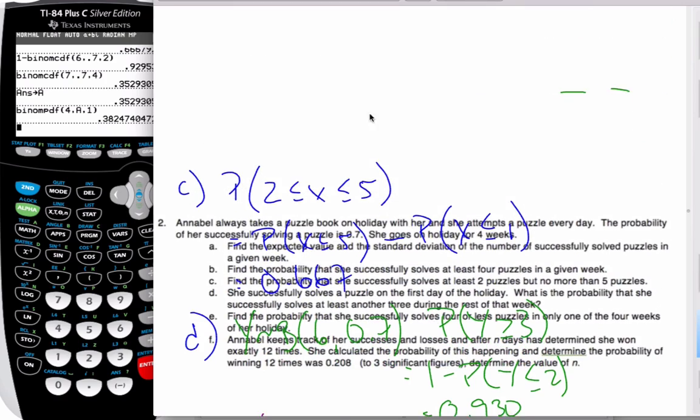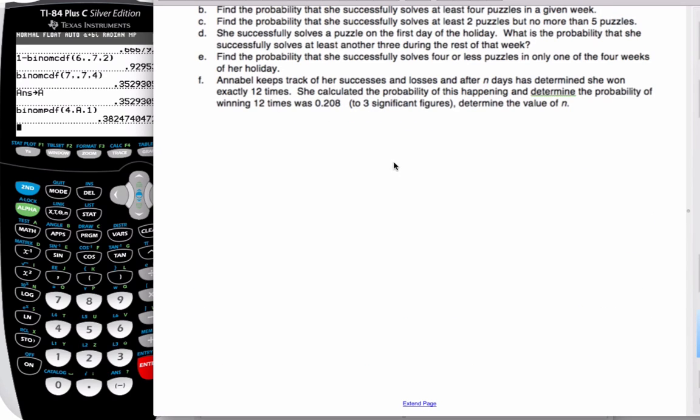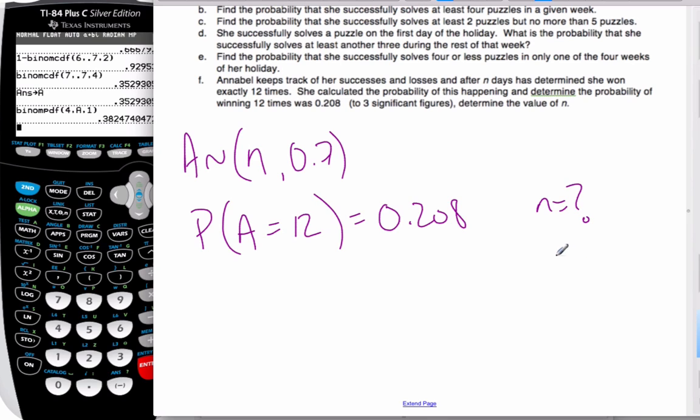Okay. Now, we have one more to go. Annabelle keeps track of her success and losses after N days has been determined she has won exactly 12 times. So she keeps on going now. So, we have a new one again. So, we'll call it A for Annabelle. I don't know how many days she's gone for. But the probability of winning is still 0.7. And I'm looking for the probability that A is equal to 12 equals 0.208. And I want to find N. I don't know how many trials she's had. Well, I could say N choose 12, 0.7 to the 12, then 0.3 to the N minus 12 is equal to 0.208. That would work. And then I could use my calculator to solve for N.